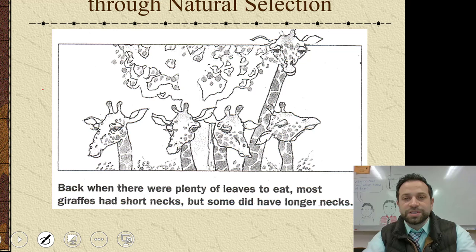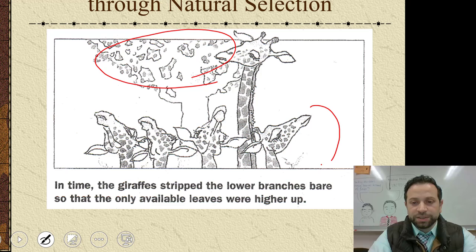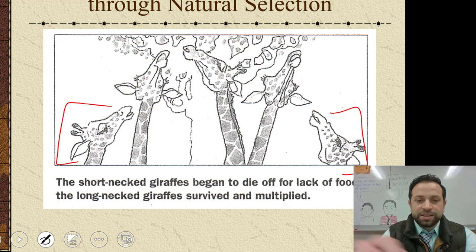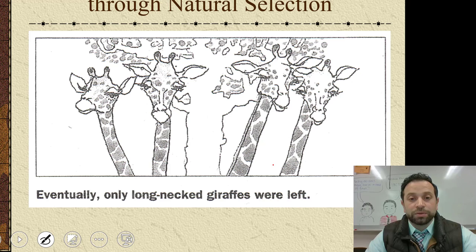Here's Darwin's theory of evolution with the same giraffe example. Back when there were plenty of leaves to eat, most giraffes had short necks, but some did have longer necks — that's where variation comes in. In time, giraffes stripped the lower branches bare so the only leaves were higher up. The short-necked ones started to die off because they couldn't eat, while the tall ones survived because they could reach the food. The taller ones reproduced, and their offspring ended up having long necks too. Eventually, only long-necked giraffes are left. This is Darwin's theory of evolution, which is correct.